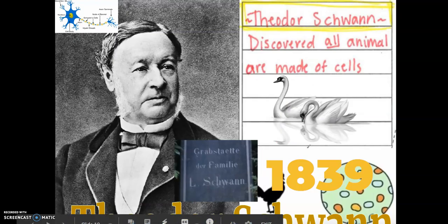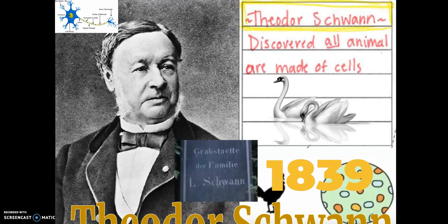Our second contributor is Theodore Schwann. You can remember which scientist did what by thinking of Schwann as a swan. Theodore Schwann studied animals and animal tissues, and he came to the conclusion that all animals are made of cells.